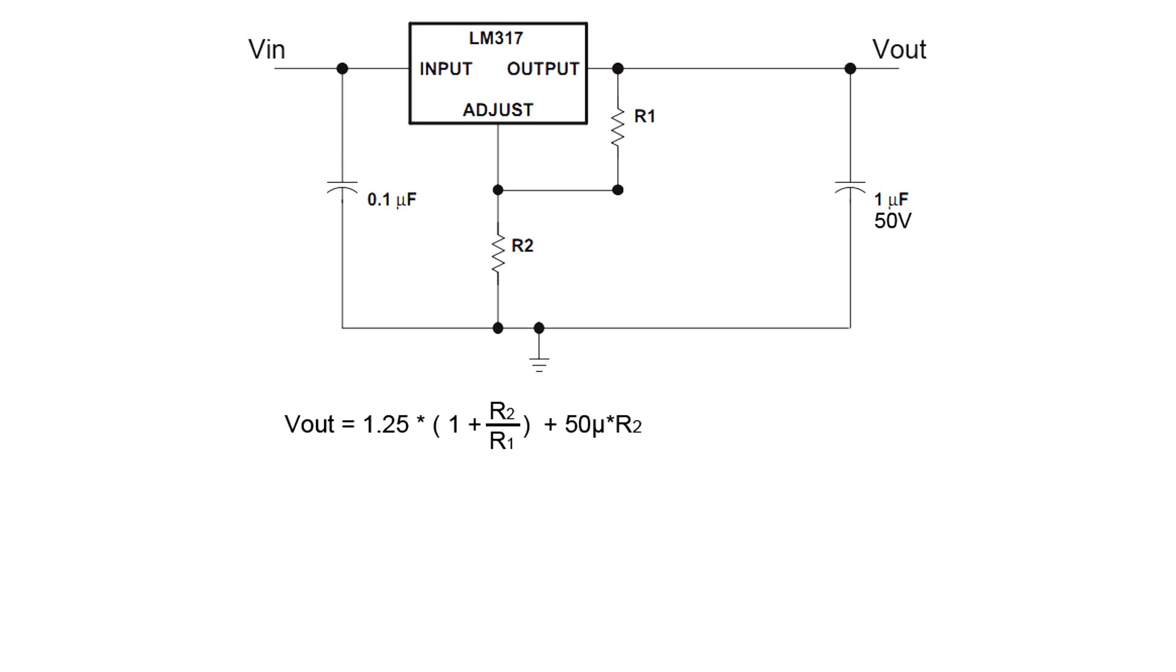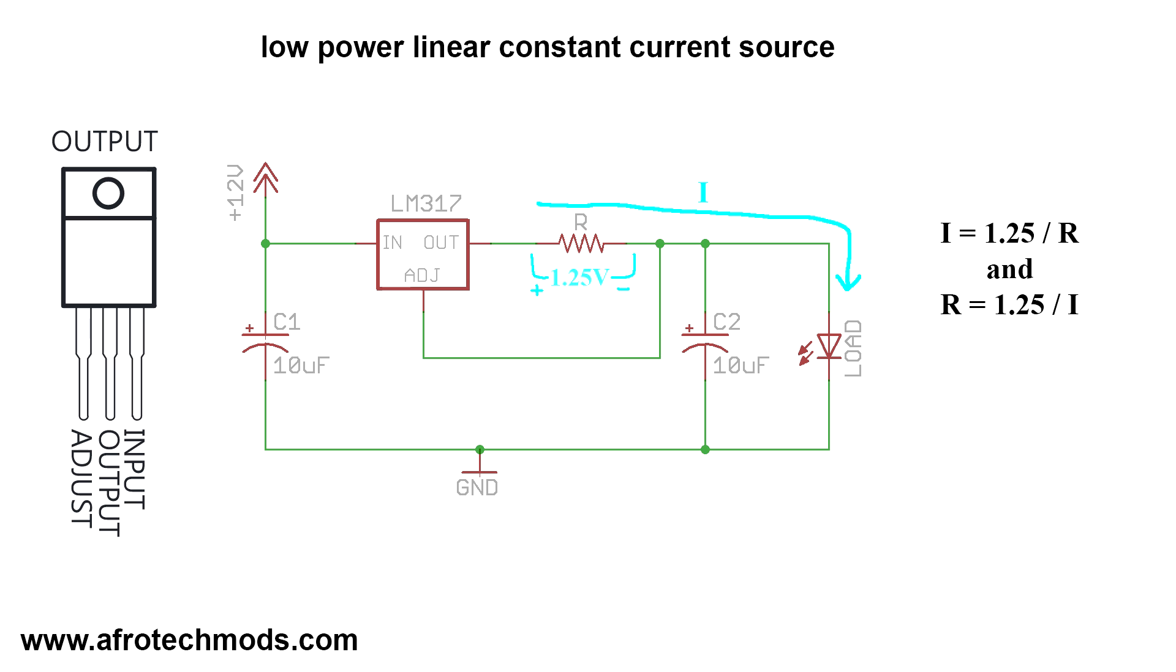You can use this behavior to build an adjustable voltage source, or you can use it to build an adjustable current source. This equation is basically Ohm's law: volts divided by resistance equals current. And since you know the LM317 is giving you a 1.25V difference, by changing the resistor value you can choose the current.